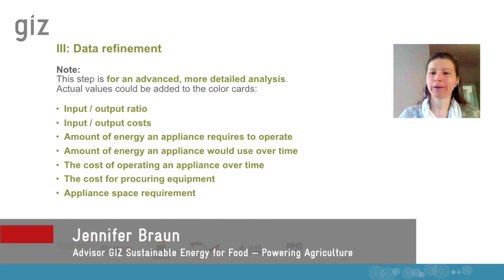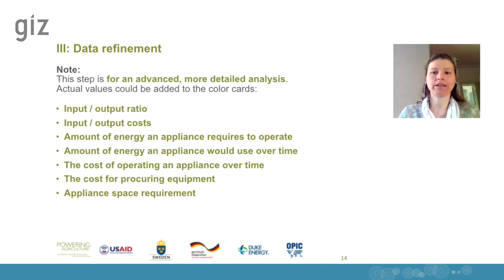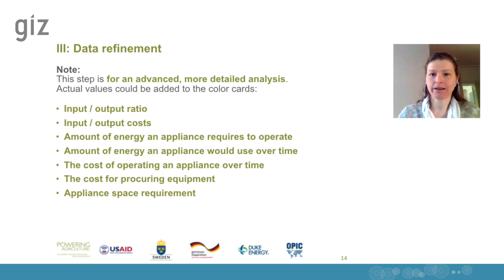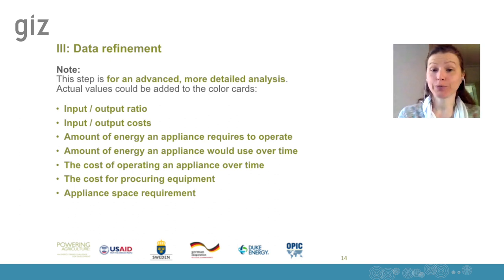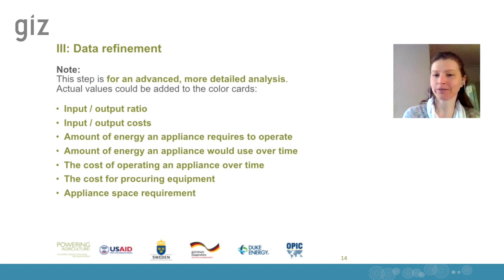The third step in the entire mapping process is data refinement. Not everyone will come to this stage — it is for when you are at the beginning of a project and really want to dig into the nitty-gritty of energy use and cost of energy along the value chain, requiring more quantitative analysis. For this step, we suggest producing actual values, and additional research is evidently required. We have listed some suggested ratios, cost information and other details you could look into — not an exhaustive list; you use what fits best.